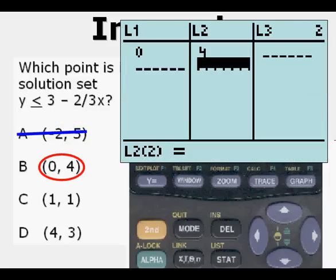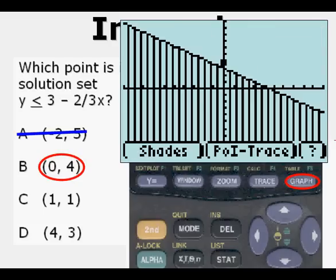Next, we go back to stat edit. Place 0 comma 4 in. We graph it. And we see that the point also is above the boundary line. So we cross that off.